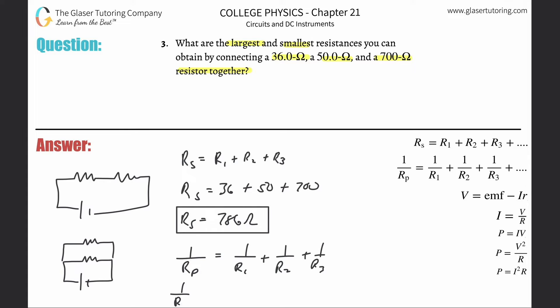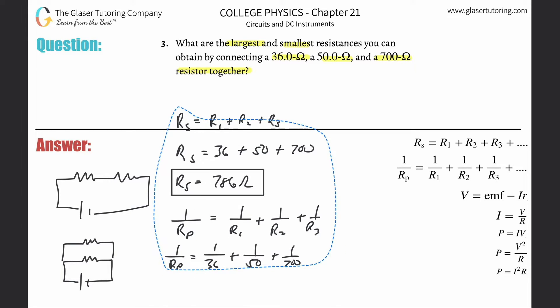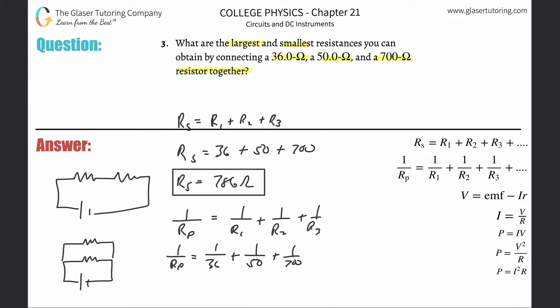Now plug in your resistances. So this is now 1 over the resistance parallel will be equal to 1 over 36 plus 1 over 50 plus 1 over 700. Plug that now into the calculator. I'm going to move this up just to give myself a little more space.